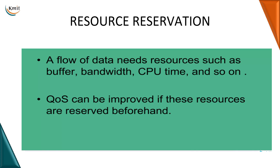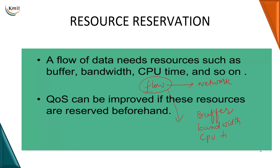The other two techniques for quality of service are resource reservation. What we basically do is, before a flow has to go through a particular network, we will reserve the resources required for the flow. What kind of resources will be required? You will require buffer space for storage, bandwidth for data transmission, and CPU time for processing. If you reserve them in advance — beforehand — you will improve the quality of service of the particular flow of packets.